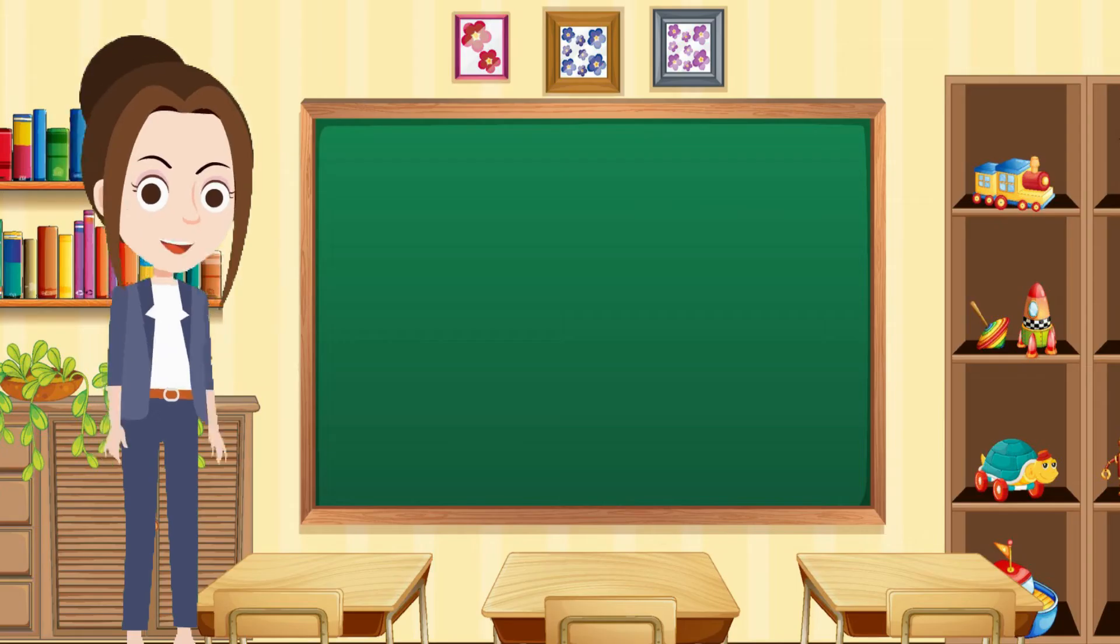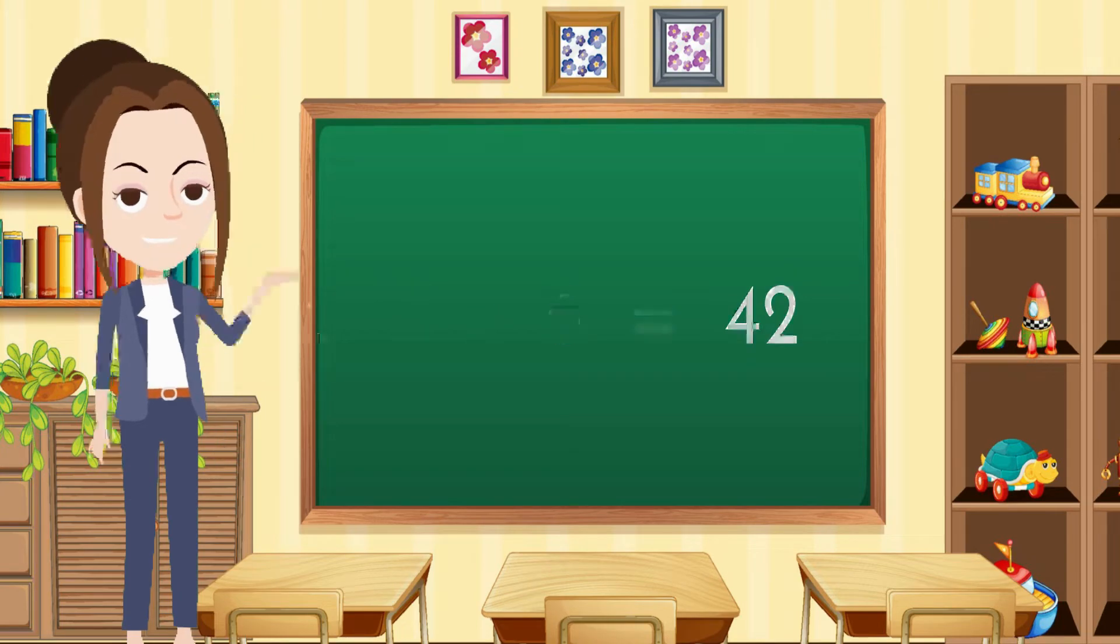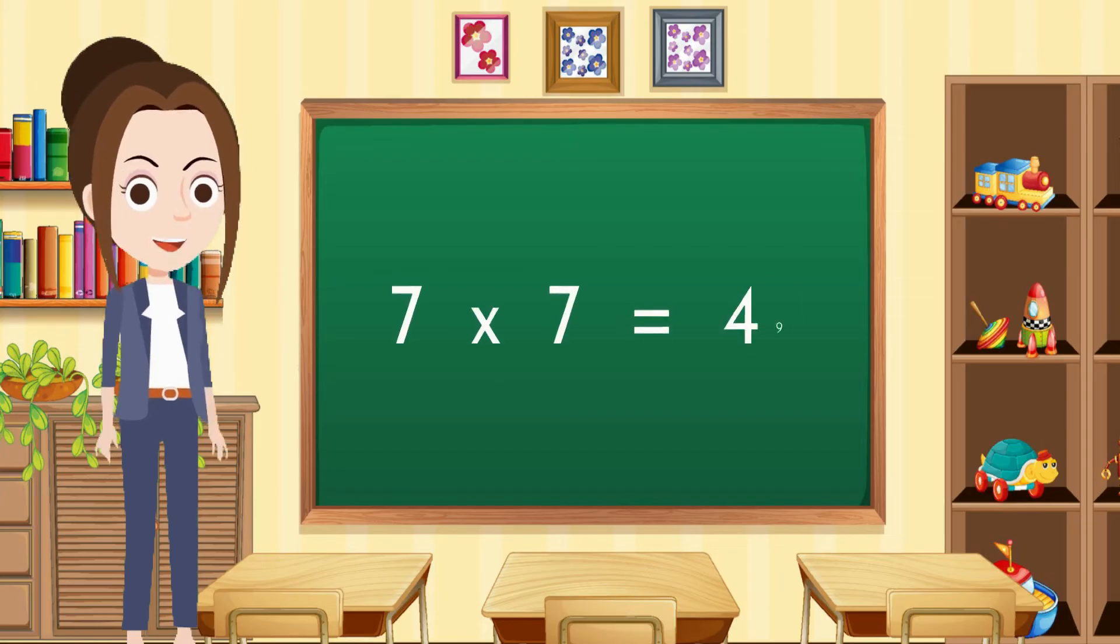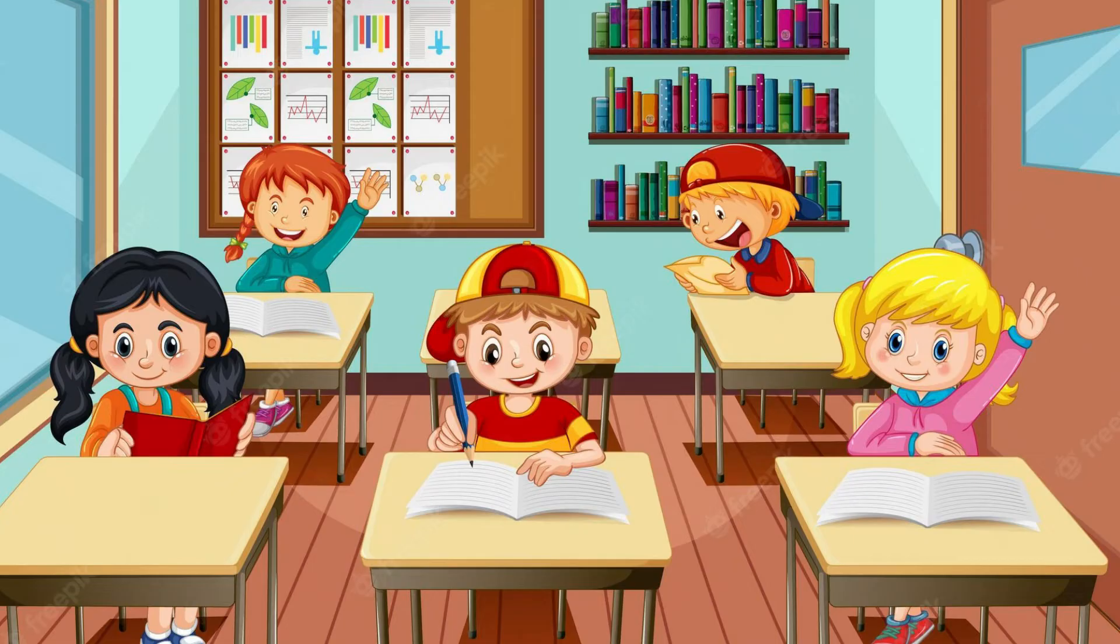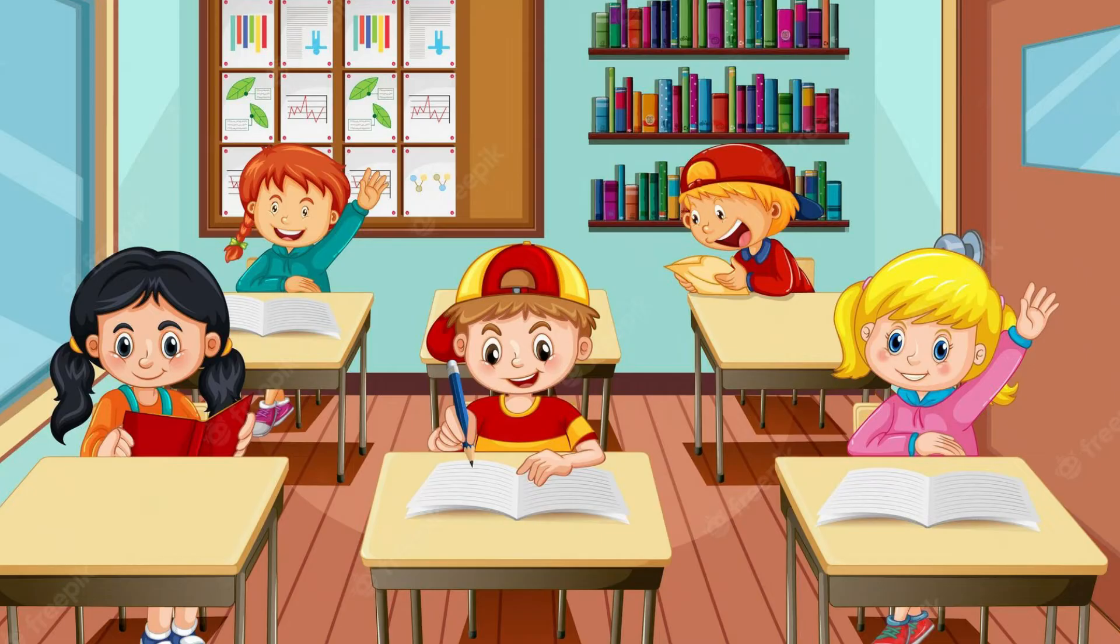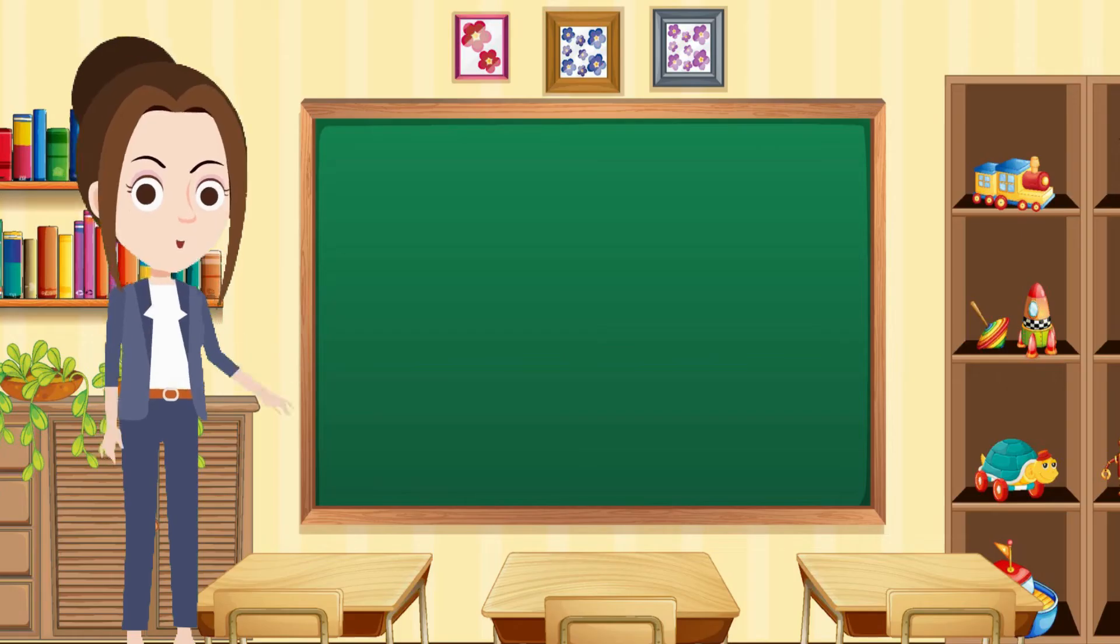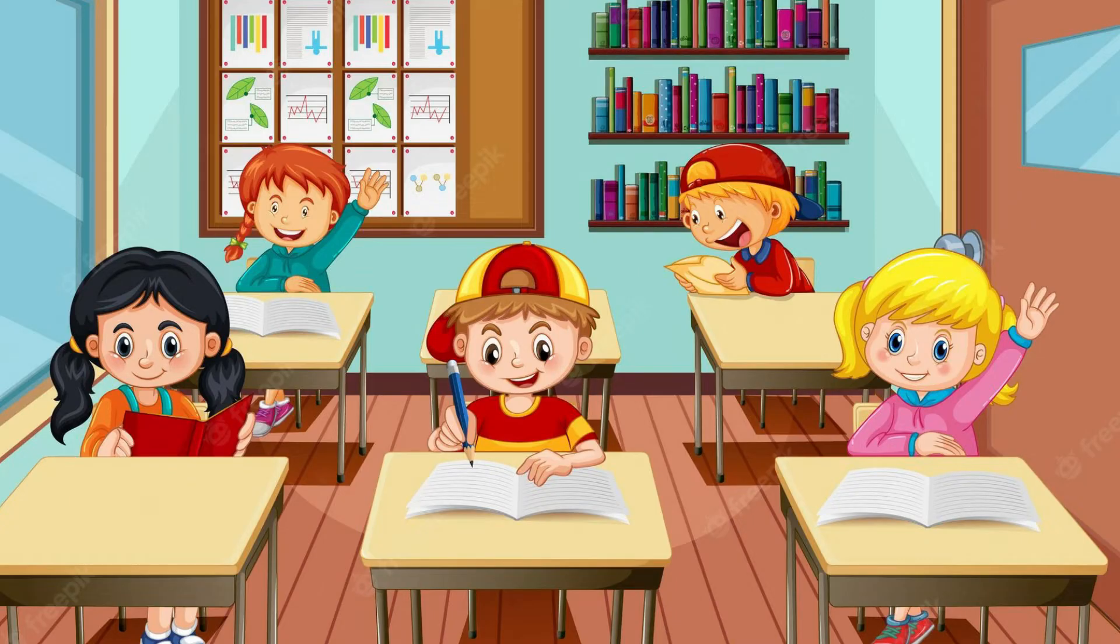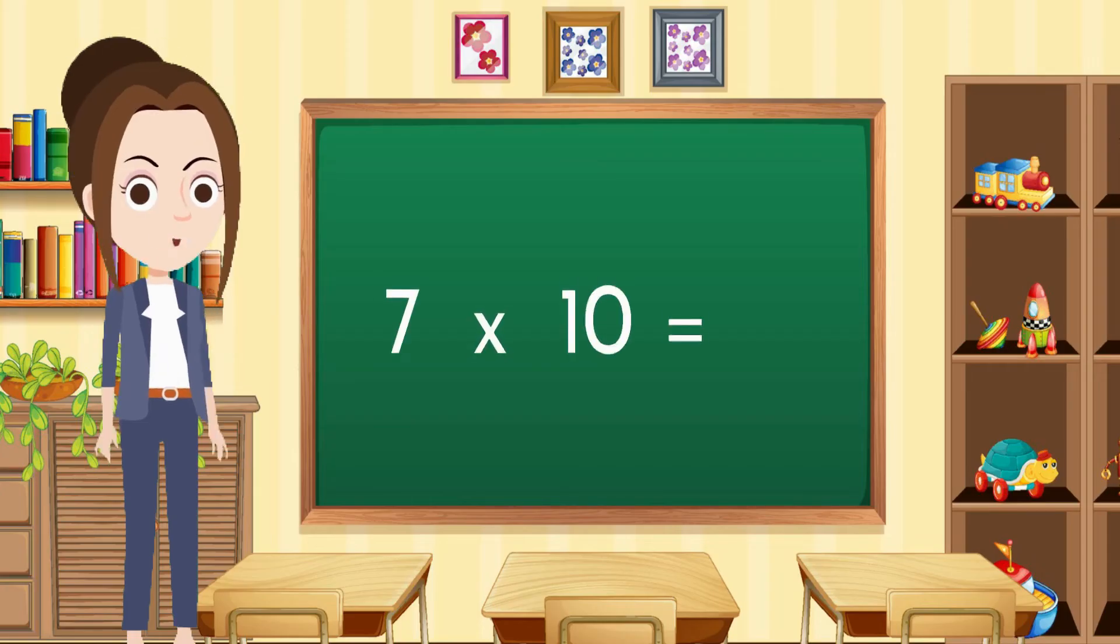Seven sixes are forty-two, seven sevens are forty-nine, seven eights are fifty-six, seven nines are sixty-three, seven tens are seventy.